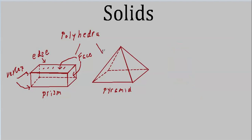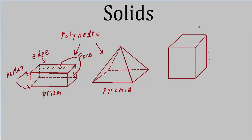These are both polyhedra — this is a pyramid, and here we have a rectangular prism. There are regular polygons, like squares and equilateral triangles, and there are also regular polyhedra. Here's one regular polyhedron where all the edges are congruent — it's called a cube. Every face of this polyhedron is the same square, and that's one of our regular polyhedra.